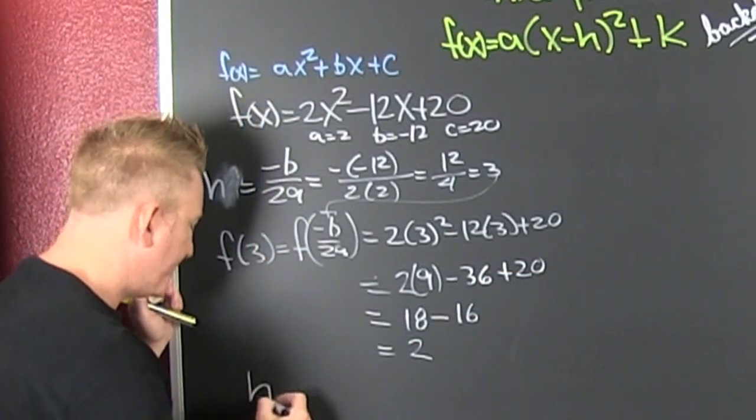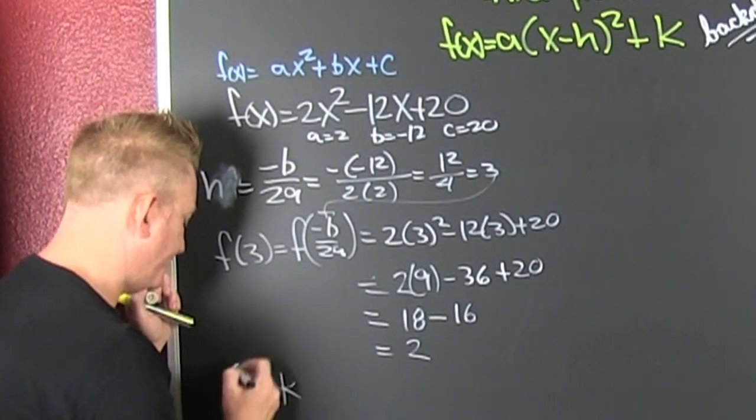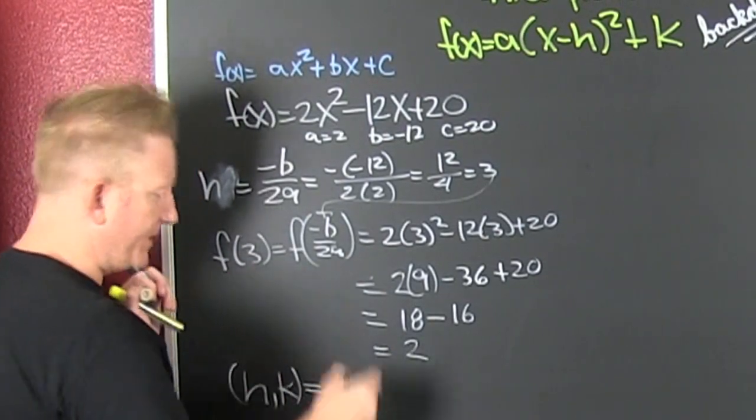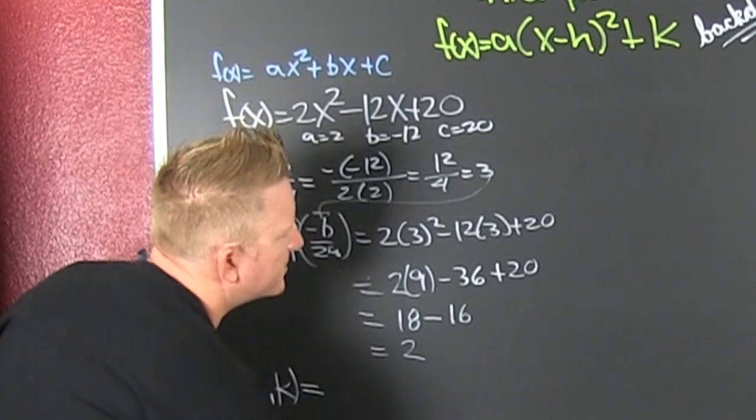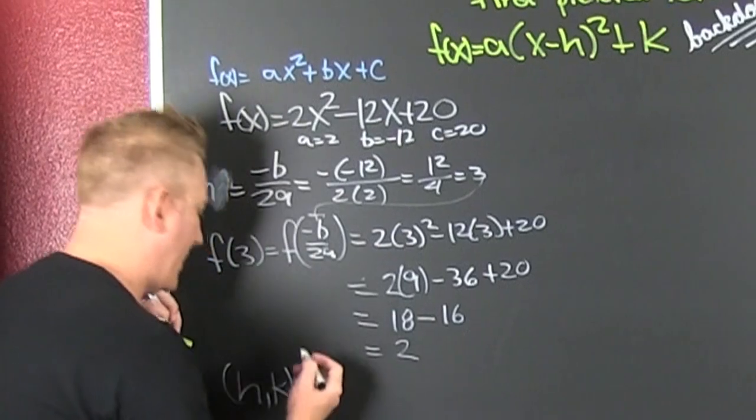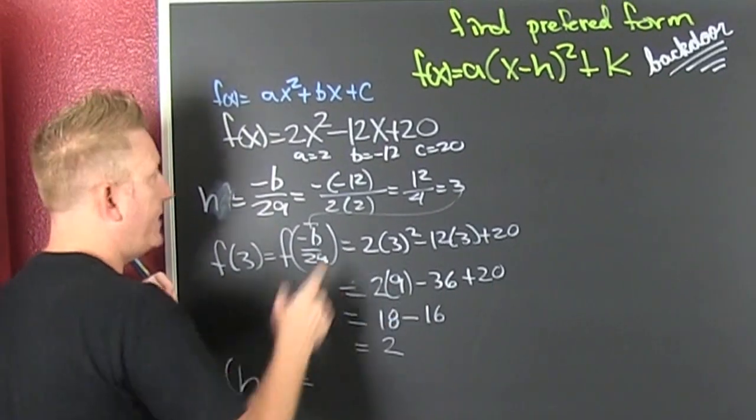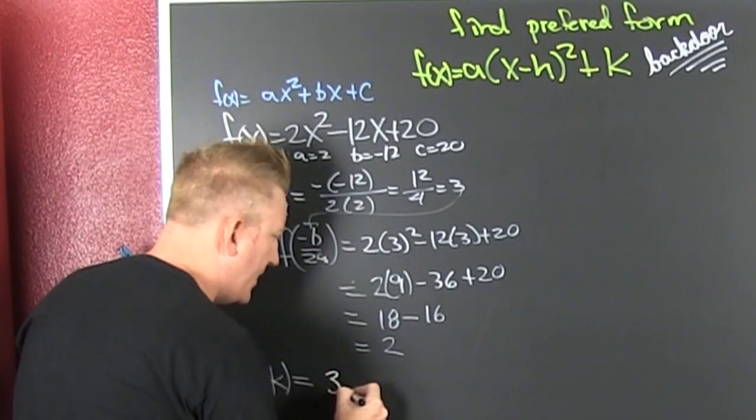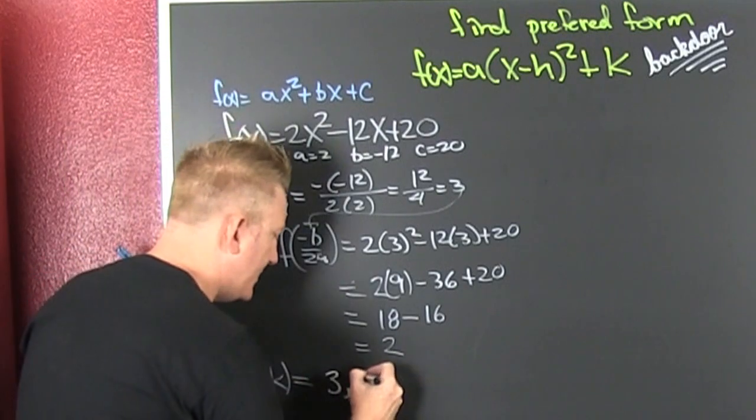So what do we deduce? That our h, k. Should we check that? So then my h is 3 and my k is 2.